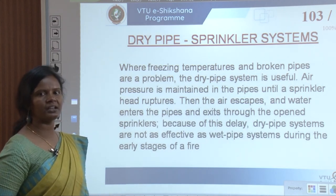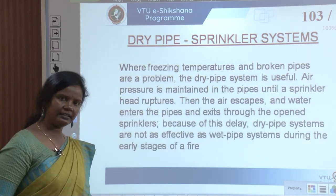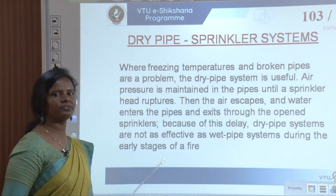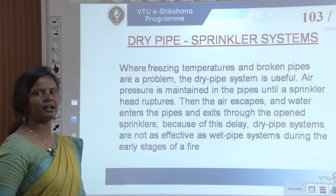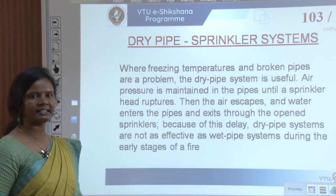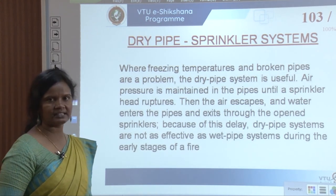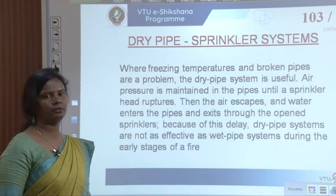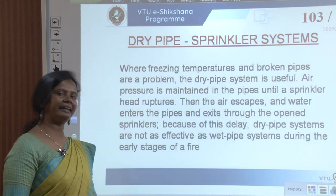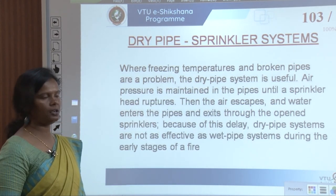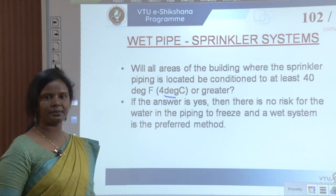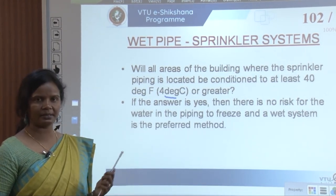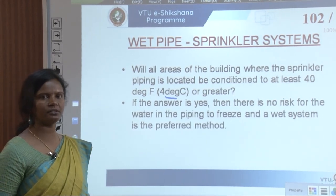Where freezing temperatures and broken pipes are a problem, the dry pipe system is useful. In dry pipe systems, air pressure is maintained in the pipes until a sprinkler head ruptures — then the air escapes and water enters the pipes and exits through the open sprinklers. Because of this delay, dry pipe systems are not as effective as wet pipe systems during the early stages of a fire. We will look at dry pipe systems and other types in the next class.